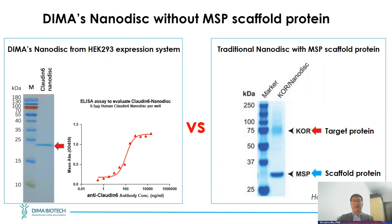Here is a comparison of our technology versus MSP nanodisc technology. On the left, our approach produces Claudin-6 as a highly homogeneous single band on SDS-PAGE, suitable for ELISA. On the right, from a JBC paper using MSP, the target protein is purified but co-purifies a large amount of the MSP scaffold protein. When used for immunization, MSP creates background antibodies — our technology avoids this contamination entirely.